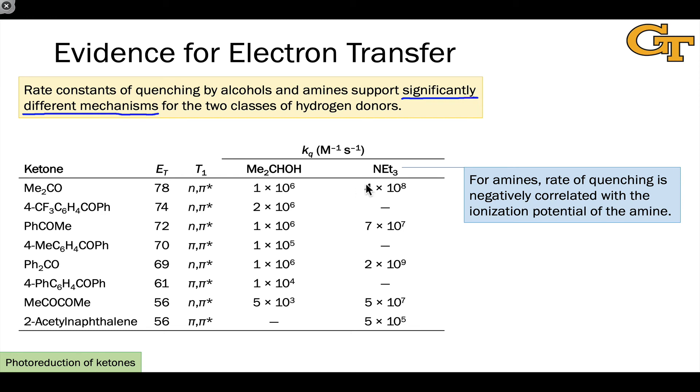One thing to notice is that amines have a rate constant of quenching of these ketones that is negatively correlated with the ionization potential of the amine. This means that the lower the ionization potential of the amine, the faster the rate of quenching. The better an electron donor the amine is, the faster quenching is, supporting electron transfer as the mechanism of quenching.